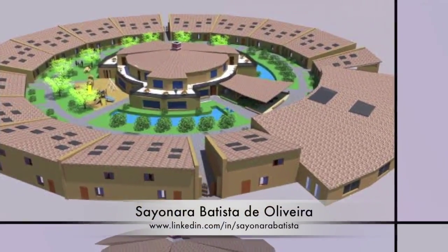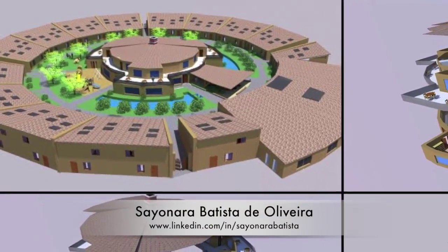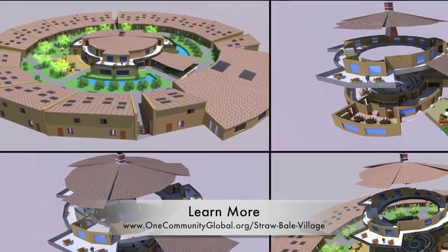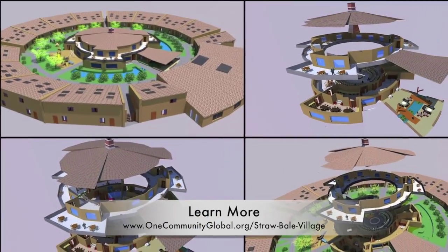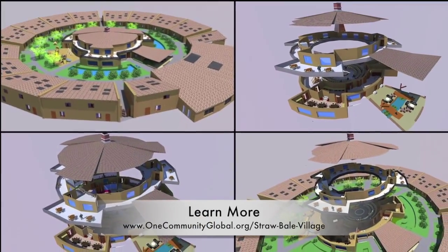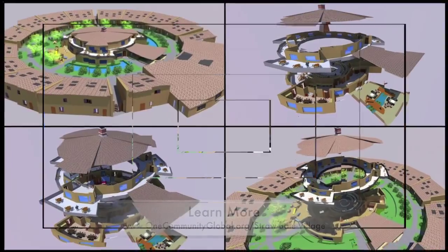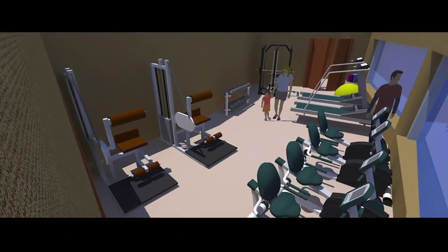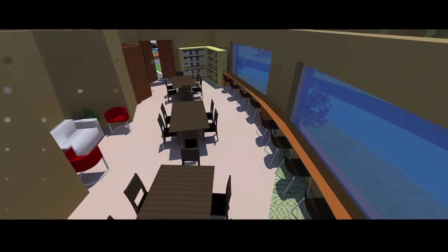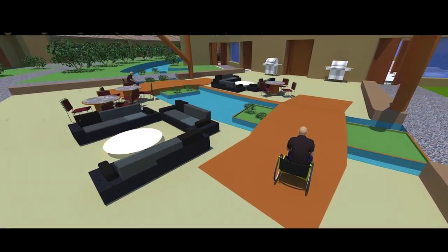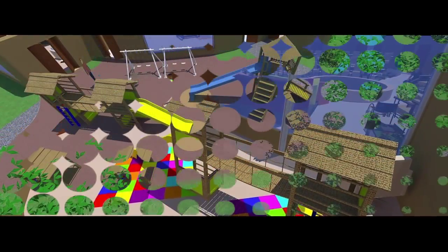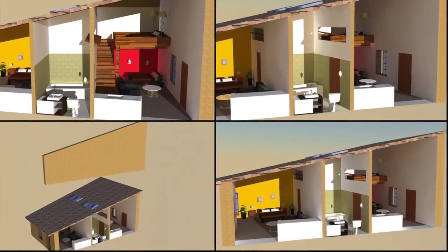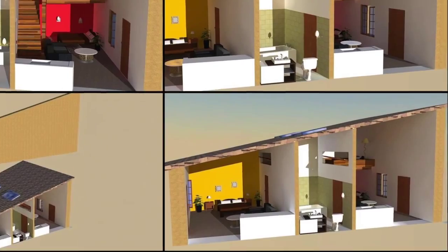On the straw bale village Pod 2, Sayonara Batista de Oliveira, a fourth-year architecture and urban planning student, finished the first round of beautiful renders of the entire Pod 2 village. This straw bale village design covers all key areas of this family-focused village: the game room, gym, library, outdoor dining area, kids' playroom, outdoor play area, central social space, and cross-sections of the living spaces.